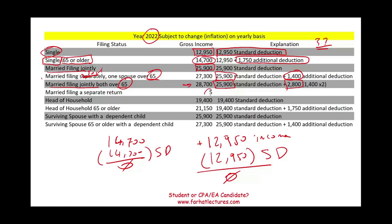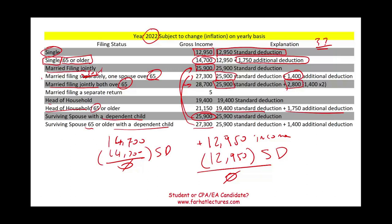Married filing separately — anything above $5 and you have to file. Throughout the course you'll learn that married filing separately is always penalized; the government doesn't like this filing status. Head of household — the standard deduction is $19,400. If you're head of household and 65 or older, the threshold goes up to $21,150 because it's your standard deduction plus the additional deduction of $1,750, like a single filer. Surviving spouse with a dependent child is $25,900 — the same as married filing jointly. Surviving spouse 65 or older with a dependent child is $27,300, just like married filing jointly with one spouse over 65.